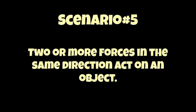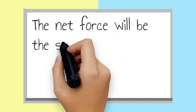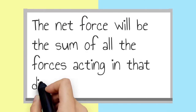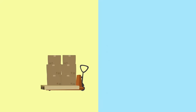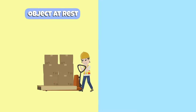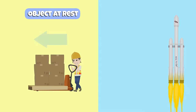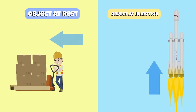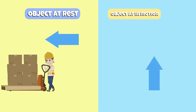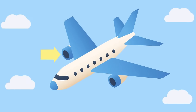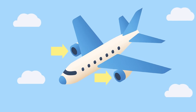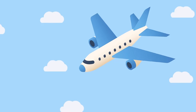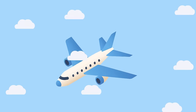Two or more forces in the same direction act on an object. In this case, the net force will be the sum of all the forces acting in that direction. If a body is at rest, it will start moving in the direction of the forces. If a body is in constant motion, the speed will increase in the direction of the net force. Twin engines on a jet are an example — both create a force in the same direction that helps the jet move.